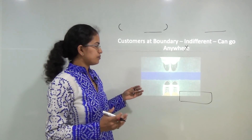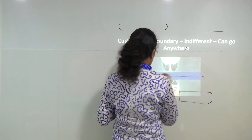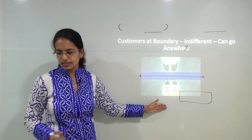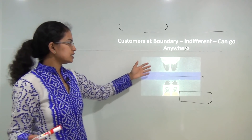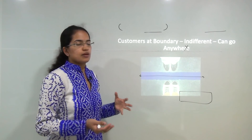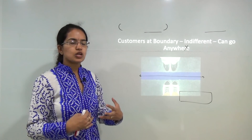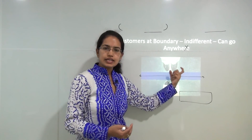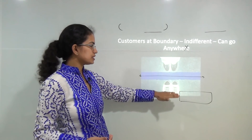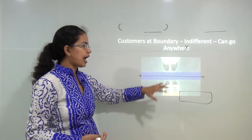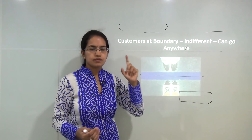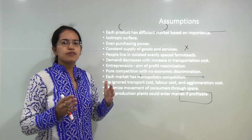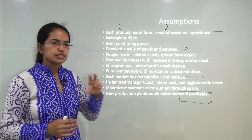Lösch tried to explain that if you have a boundary, and at this boundary you have two people—one on each side—both persons are indifferent based on the availability of the product, the approachability, and the best price. They could move in any direction. So both person A and person B are indifferent and can go anywhere. That was the basic idea Lösch tried to undertake, with profit maximization as the main aim.